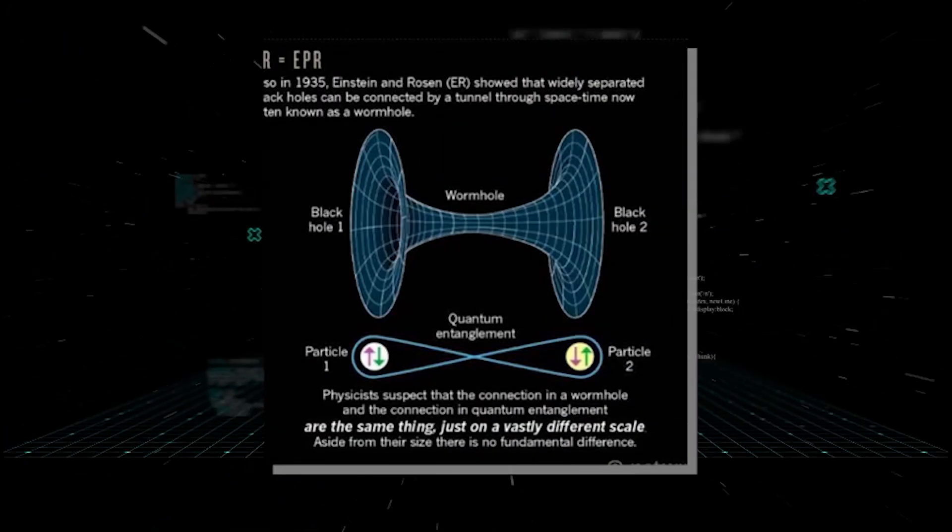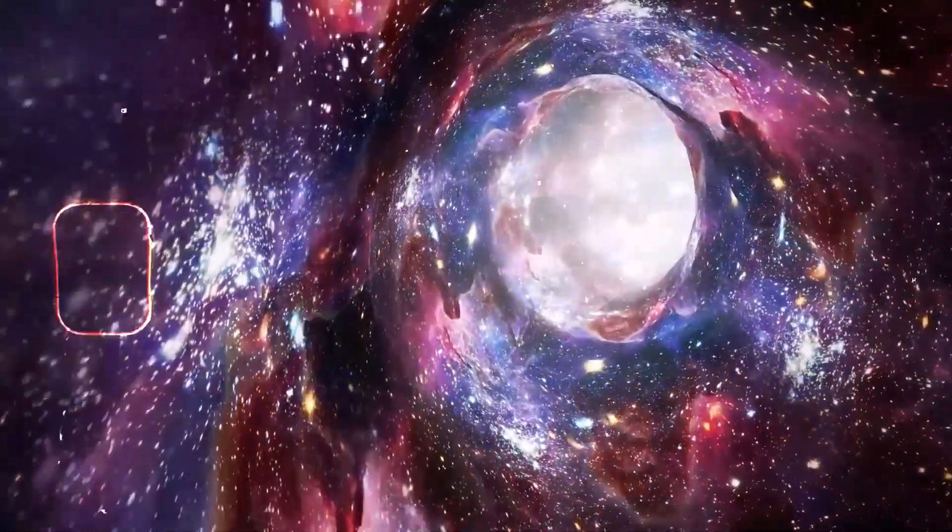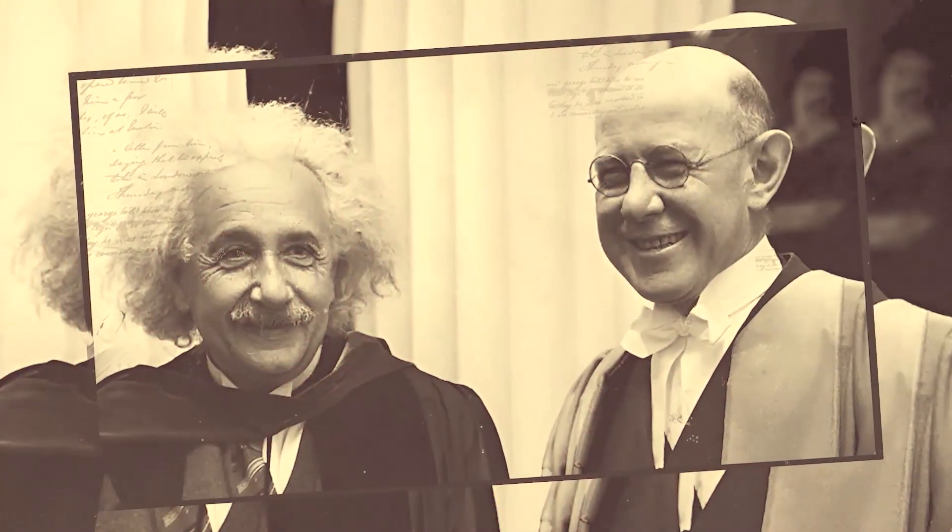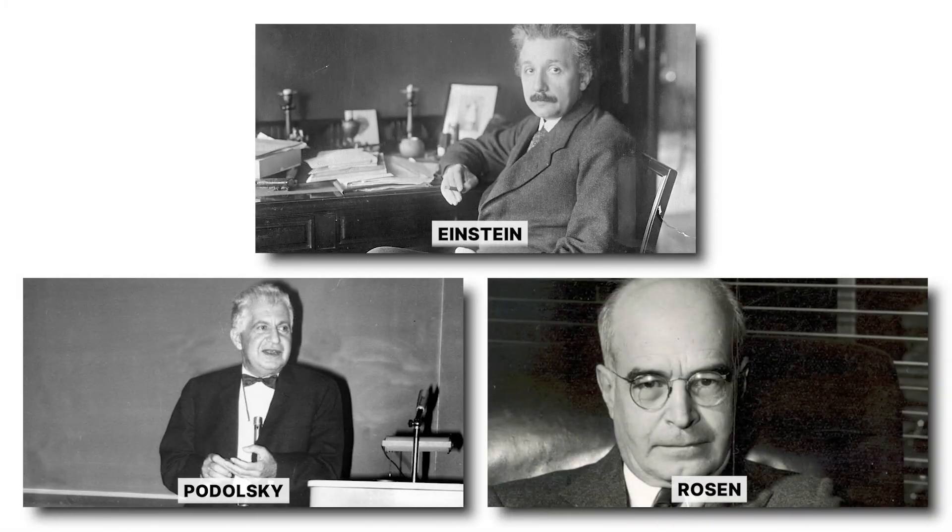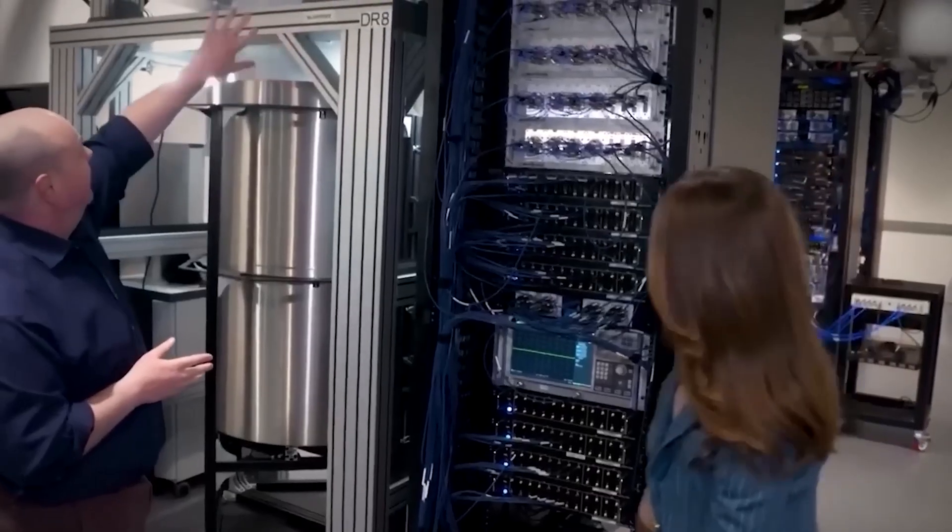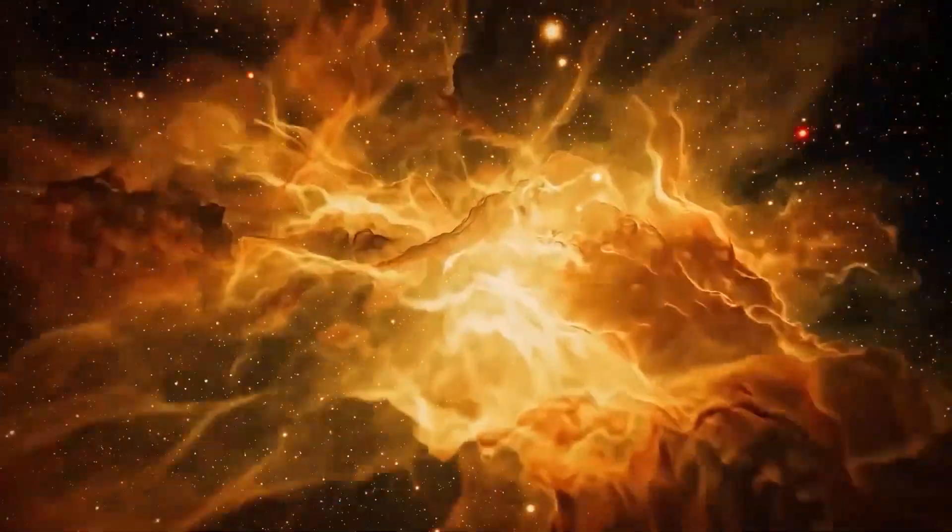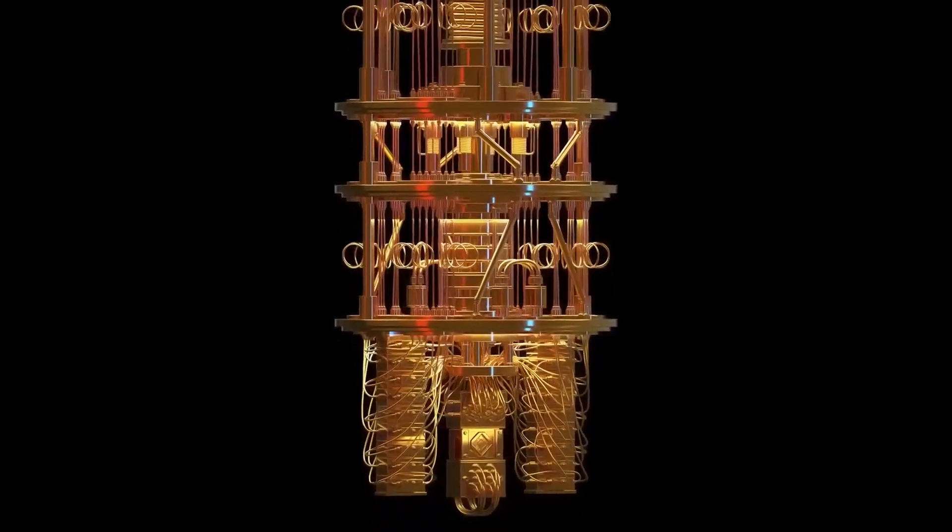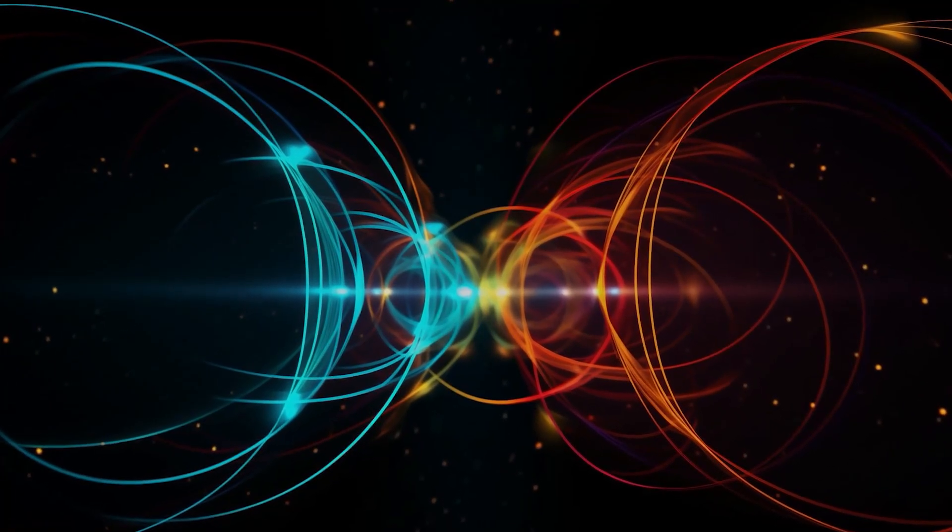Why does this matter? Because a bold conjecture known as ER equals EPR claims every pair of entangled particles is linked by a microscopic wormhole. Einstein and Rosen invented wormholes to describe black hole geometry. Einstein, Podolsky, and Rosen devised the paradox of entanglement. Decades later, theorists stitched the ideas together. The fabric of space-time might literally be threaded by quantum intimacy. Entanglement is not a weird add-on to physics. It may be physics.